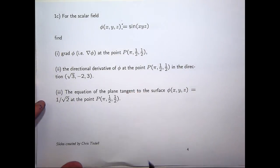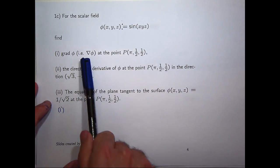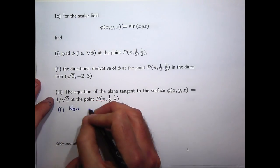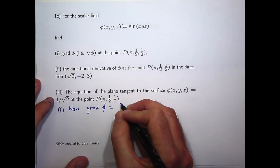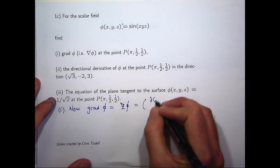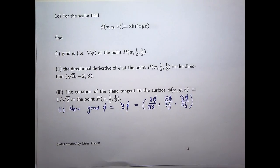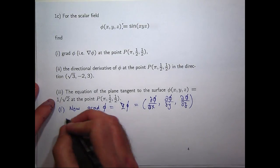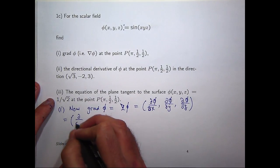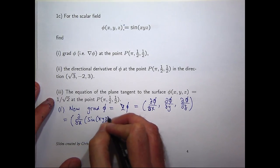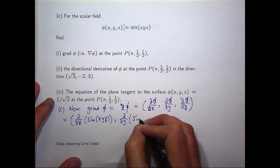Now remember the gradient is just the following. So you start with some scalar function phi. What the gradient does is operate on it through this del operator, and you produce a vector field. So your answers for these kinds of questions, when you want to calculate the gradient, should be a vector. So let's write it out.